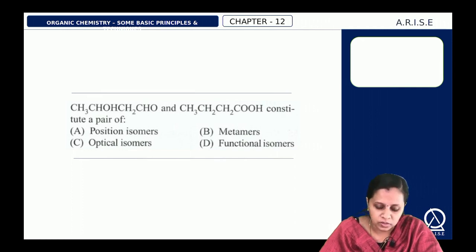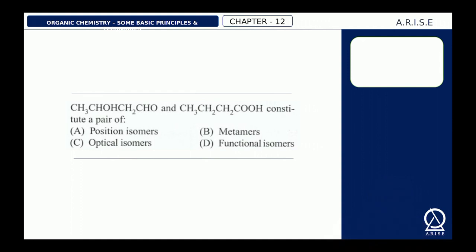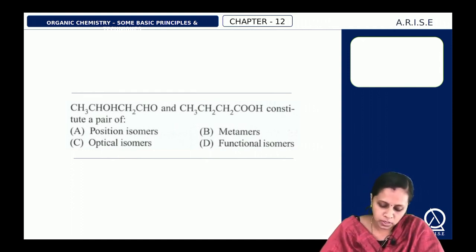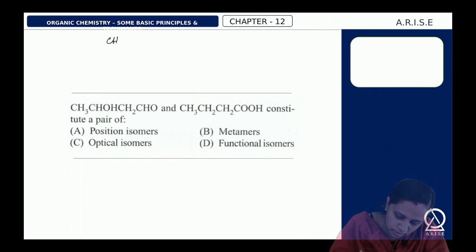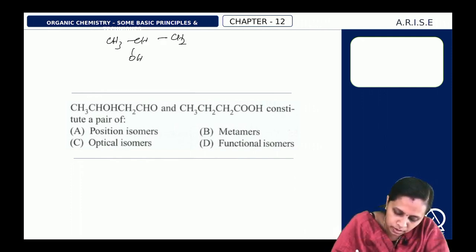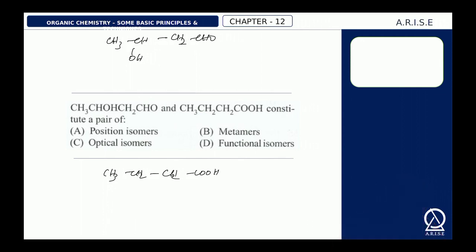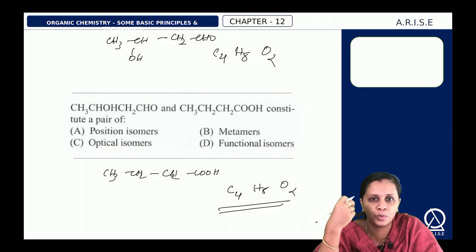Next question on isomerism. The two compounds are CH3–CHOH–CH2–CH2 and CH3–CH2–CH2–COH. Both have 4 carbons, 8 hydrogens, and 2 oxygens — molecular formula C4H8O2. The difference is in their functional group: one has an alcohol (–OH) and the other has an aldehyde (–CHO). So it is a functional isomer, option D.